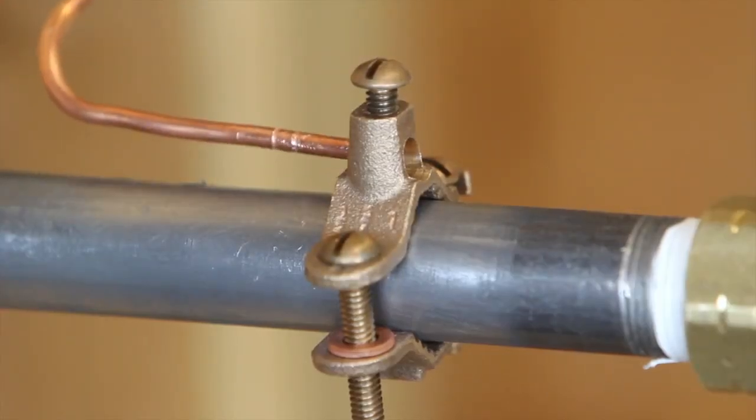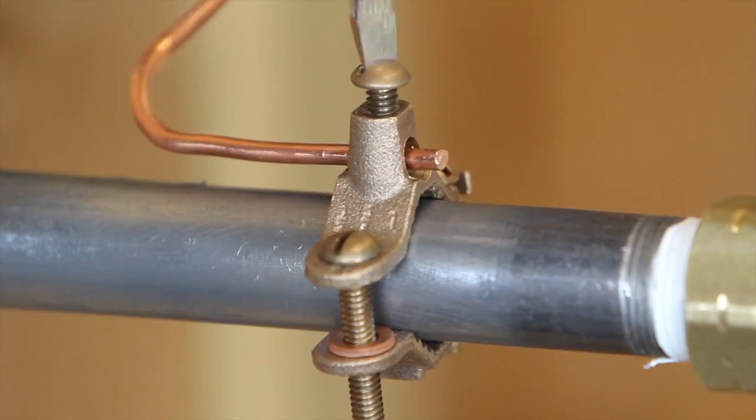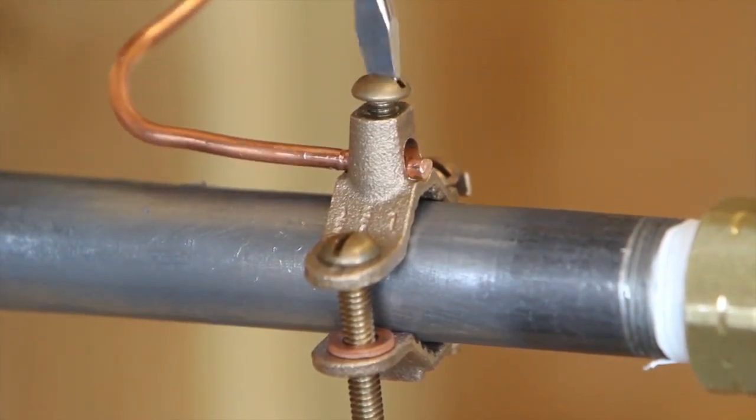Then run the minimum 6 gauge copper wire through the bonding clamp. This wire is then attached to the home's grounding network via the grounding bus bar in the panel box.